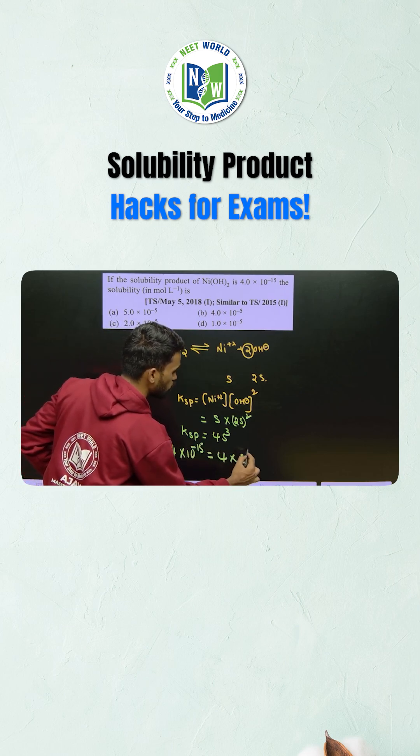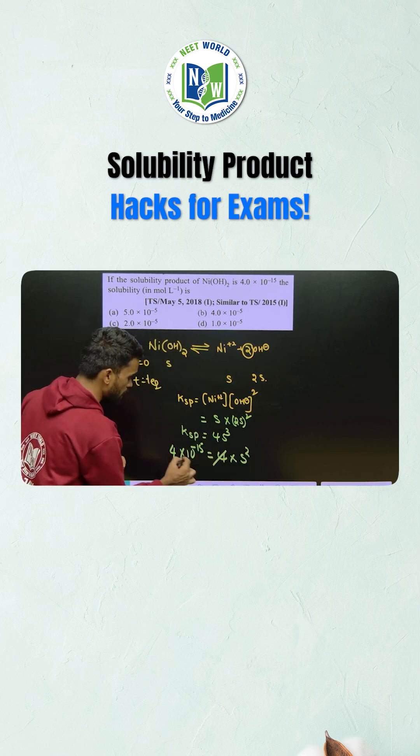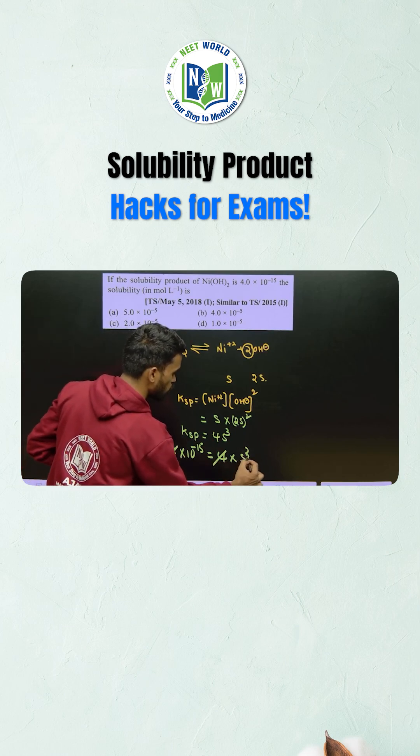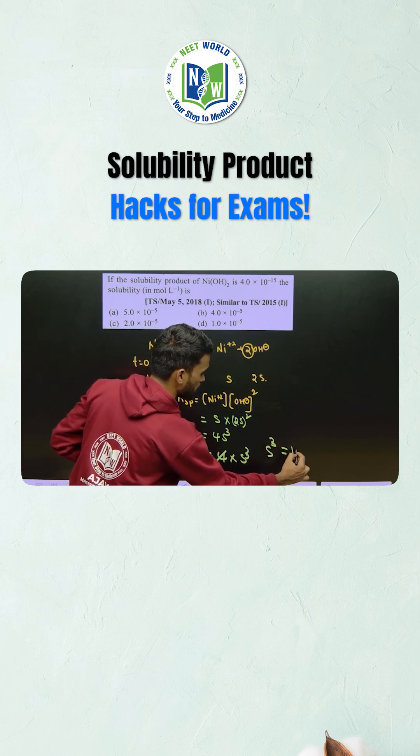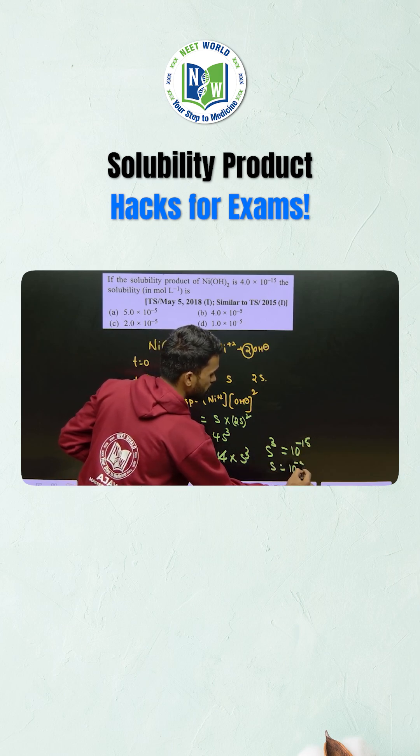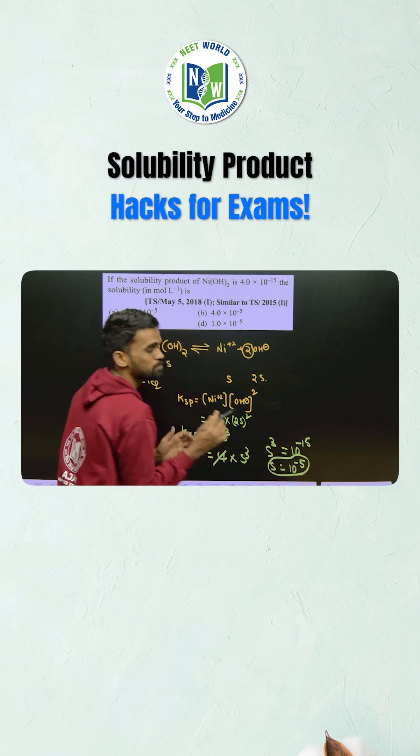So 4 into S cube here we have. I can remove this and now solubility becomes S cube is equals to 10 power minus 15 and from here S will be 10 power minus 5.